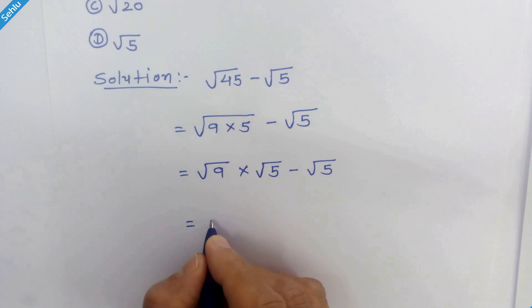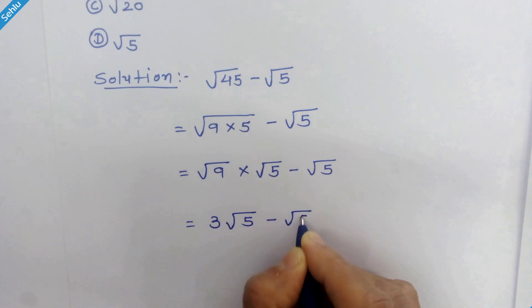Square root of 9 is 3. So we can write it like this: 3 times square root of 5 minus square root of 5.